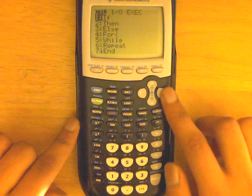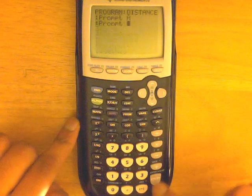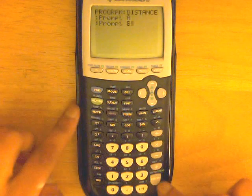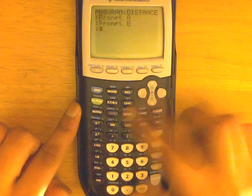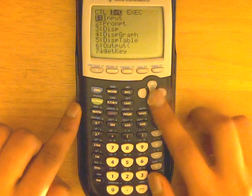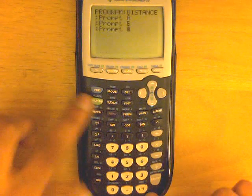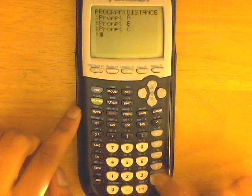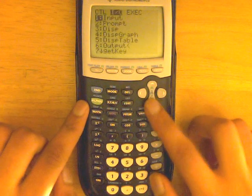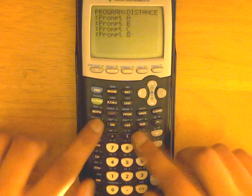So program, slide all the way to I-O, prompt, alpha-B, enter. Go to prompt again, so program, slide to I-O, down to prompt, then alpha-C, and then we're going to do it one more time for D, so alpha-D.